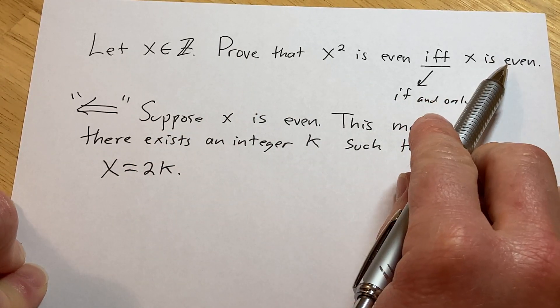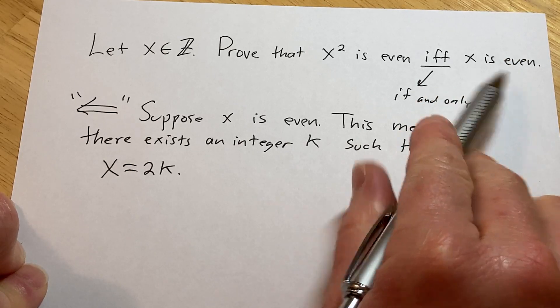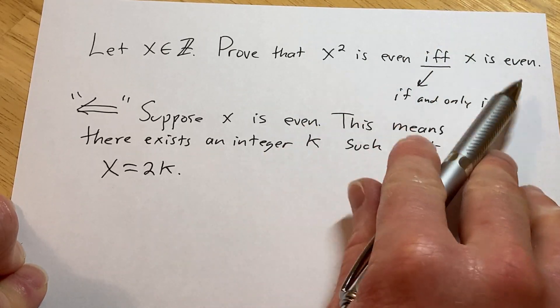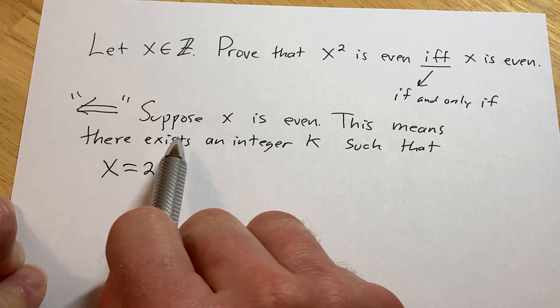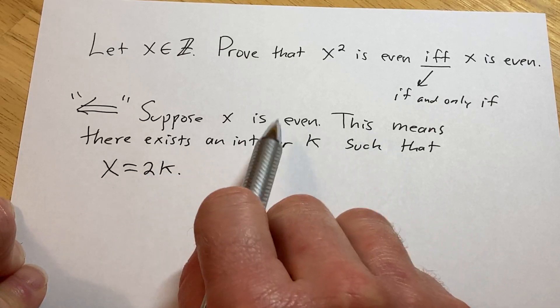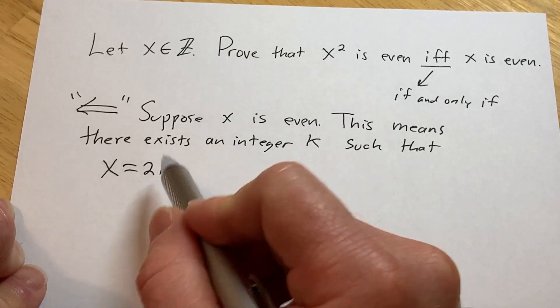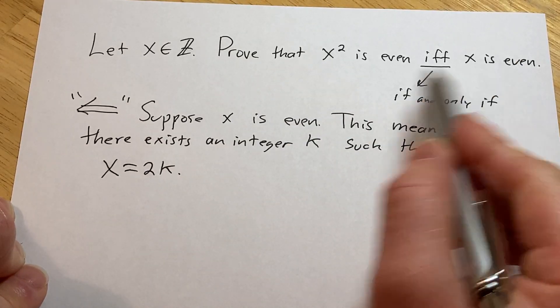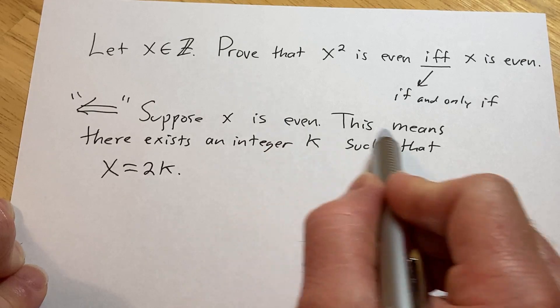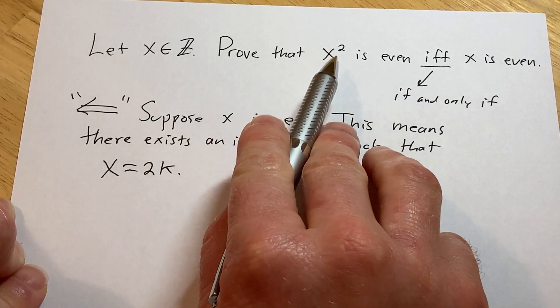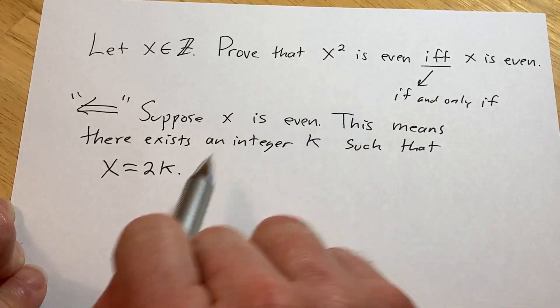So we've written down our hypothesis, we assume this is true, we're trying to show this is true, so we wrote this down, and then all we have now is we wrote down what it means for x to be even. So that's what it means. So now I think we've really exhausted all we can do with our hypothesis, we assumed it, we wrote down what it means, so now we need to look at x squared. So we can look here.